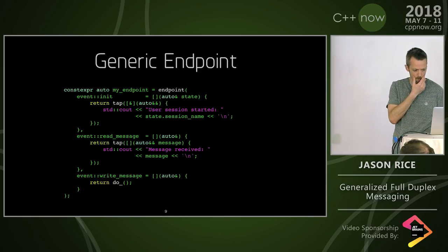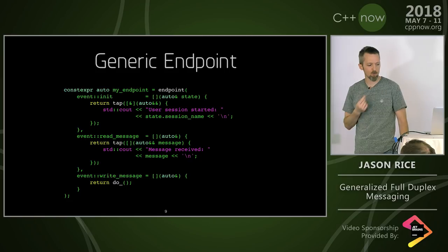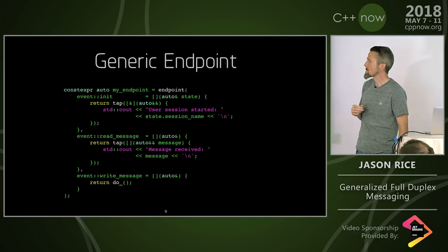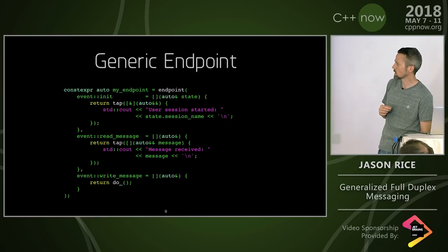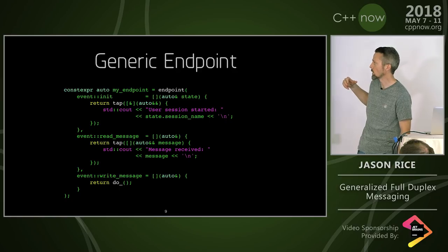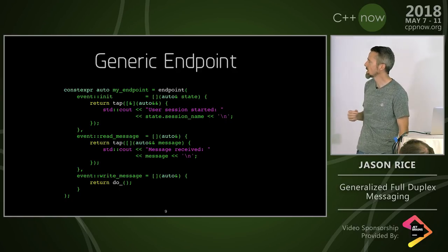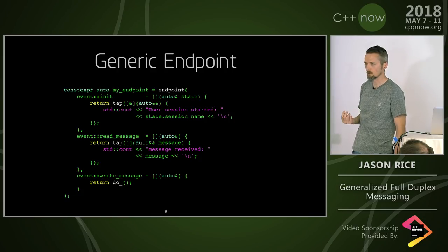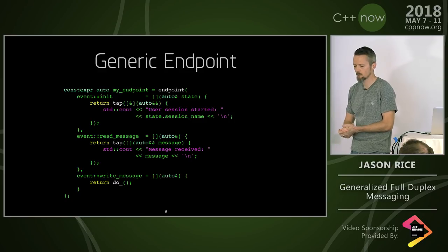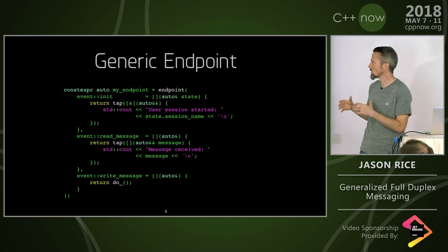Here's the one I'm proposing: a generic endpoint. It's more like a specification of how an endpoint should behave. It uses a named parameter interface similar to if you've seen Dyno, using a HANA map on the backend. You have an init event, a read message, a write message, and an error event. Instead of just being a lambda callback, in this case it's a lambda that receives a state object — what I should have called 'self.' The endpoint is an object you can access from within these handlers so that you can access things like the socket.